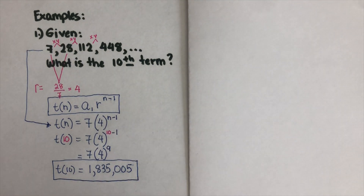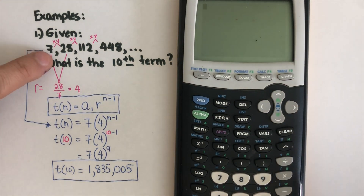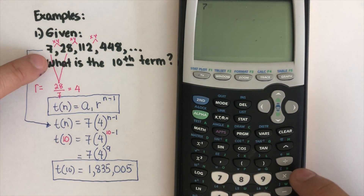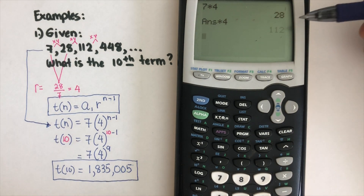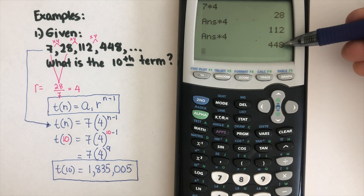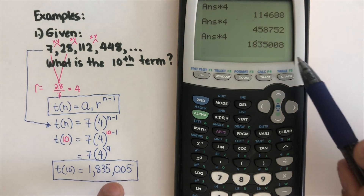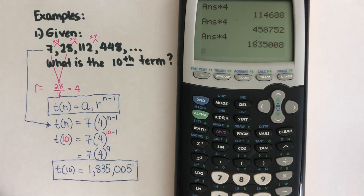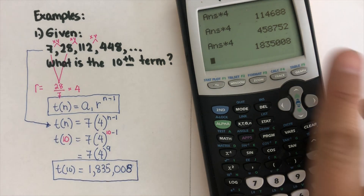Let's verify with the calculator. Starting with 7, multiply by 4 repeatedly: that gives the 2nd, 3rd, 4th, 5th, 6th, 7th, 8th, 9th, and 10th terms. The result matches — they are a match.